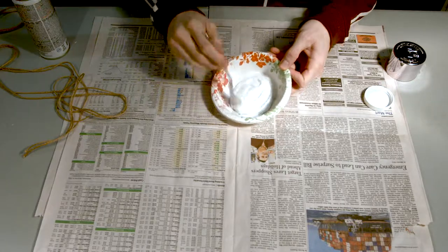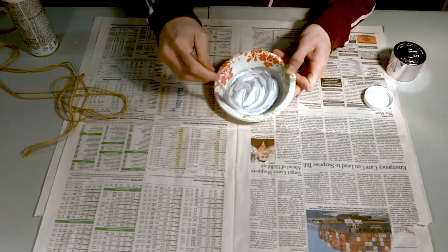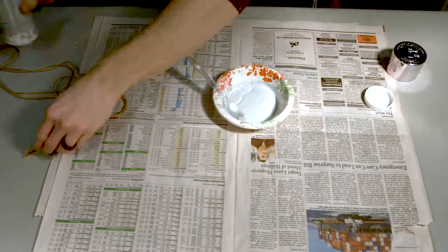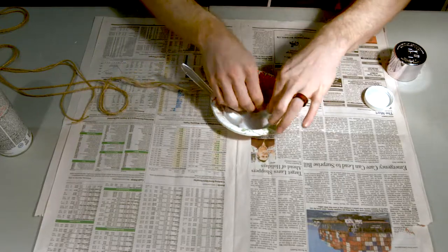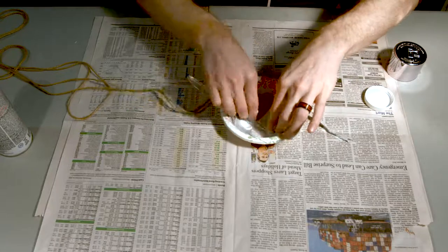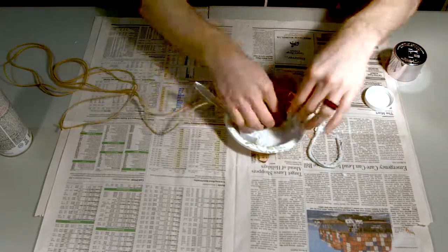You'll want to mix Mod Podge with some paint. I had some silver spray paint, so I just sprayed that in there. It turned out the color that I wanted, but really it was hard to mix. I suggest using regular acrylic paint to mix into your Mod Podge.